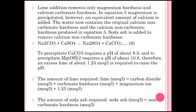When soda (Na₂CO₃) is added to water containing calcium sulfate impurity, sodium sulfate is released and calcium carbonate precipitate is formed. So when Na₂CO₃ reacts with calcium sulfate it gives sodium sulfate plus calcium carbonate precipitate. The precipitate of CaCO₃ requires a pH of about 9.5 and the precipitate of magnesium hydroxide requires a pH of about 10.8, therefore excess lime is added to raise the pH so the reactions are possible.